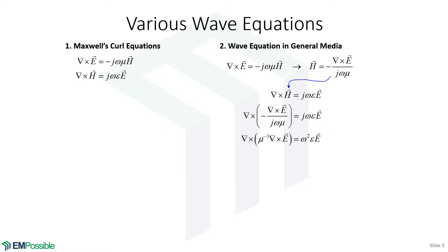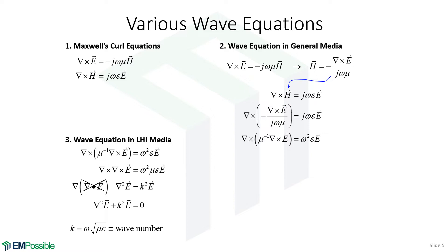Given the two curl equations, we substitute one into the other and derive a wave equation for general inhomogeneous media. This is not practical to solve by hand, but it's the equation used for computer solutions. For this class, since we're solving things by hand, we need a simplification. We assume all materials are linear, homogeneous, and isotropic, and our wave equation reduces to a much simpler form where omega-squared mu-epsilon is replaced by k-squared, our wave number.